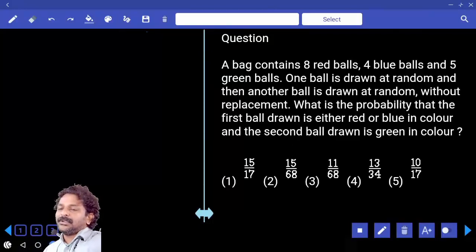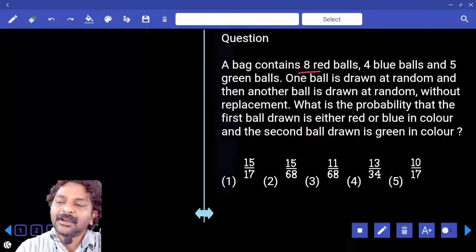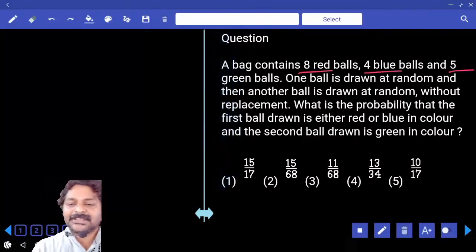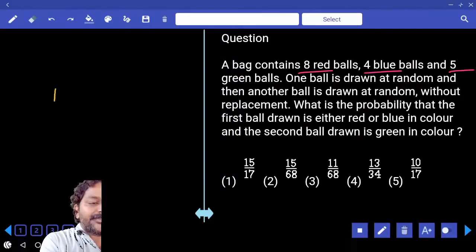So total how many balls we have? Eight plus four plus five. First we need to pick one ball that can be done in 17C1.